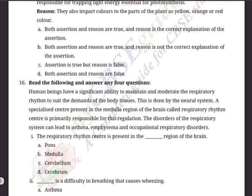Question 16 — Case Study: Human beings have significant ability to maintain and moderate the respiratory rhythm to suit the demands of the body tissues. This is done by the neural system. A specialized center present in the medulla region of the brain is called the respiratory rhythm center. It is primarily responsible for this regulation. Disorders of the respiratory system can lead to asthma, emphysema, and occupational respiratory disorders.